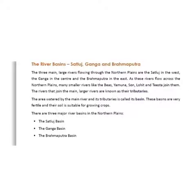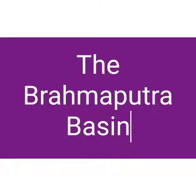The three main large rivers flowing through the northern plains are the Satluj in the west, Ganga in the center, and the Brahmaputra in the east. The area watered by the main river and its tributaries is called its basin. These basins are very fertile and their soil is suitable for growing crops. There are three major river basins in the northern plains: the Satluj Basin, the Ganga Basin, and the Brahmaputra Basin.